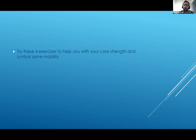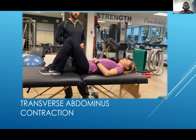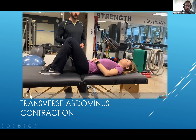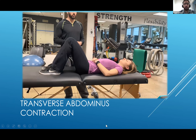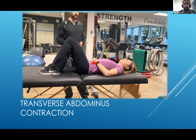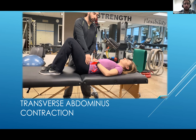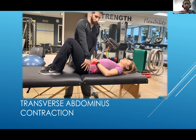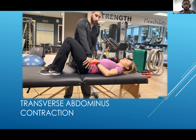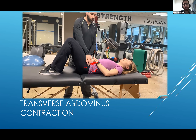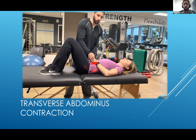Here are four exercises to improve your core strength and lumbar spine mobility and stability. First, the transverse abdominus contraction: pull your belly button down towards your spine and flatten your back against the table. You don't want to see those hips rotate back — just the belly button going down with the back getting flat. Hold for 10 seconds, 20 times.